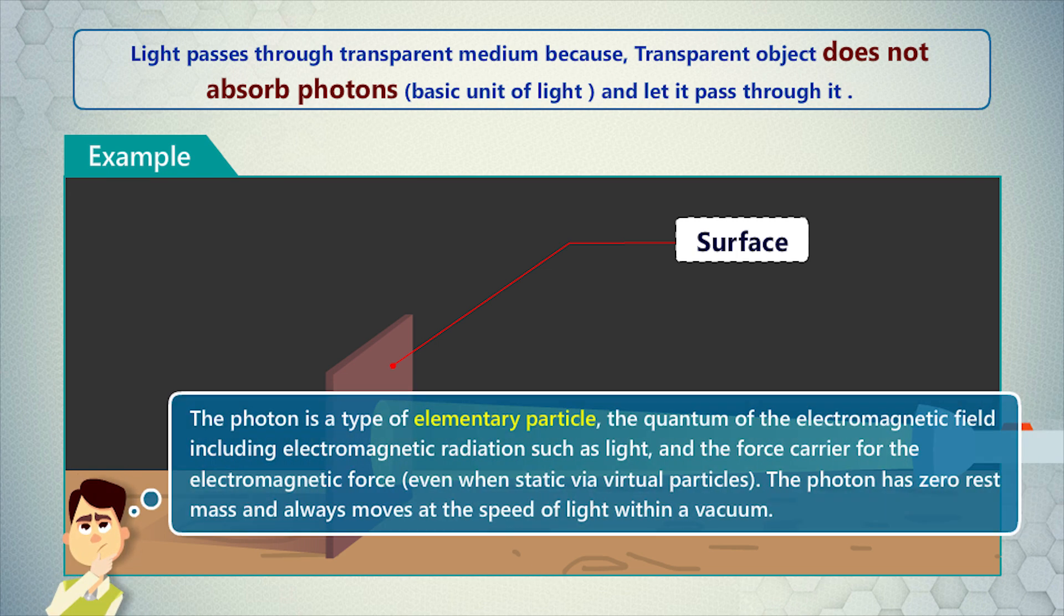Remember, the photon is a type of elementary particle, the quantum of the electromagnetic field, including electromagnetic radiation, such as light, and the force carrier for the electromagnetic force. Even when static via virtual particles, the photon has zero rest mass and always moves at the speed of light within a vacuum.